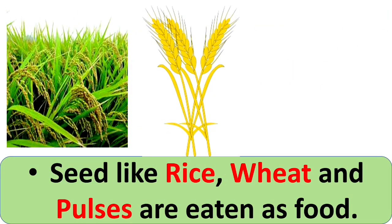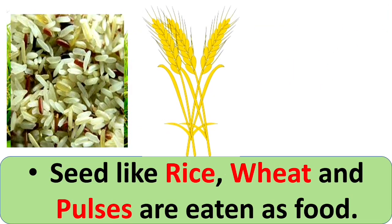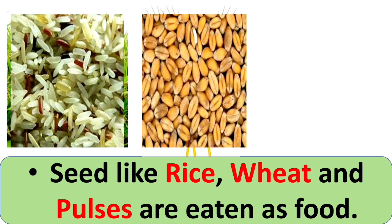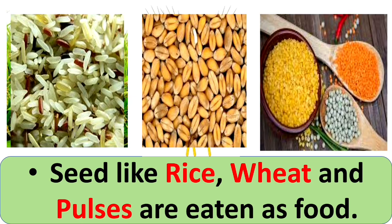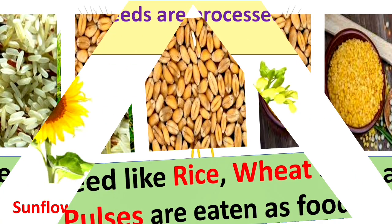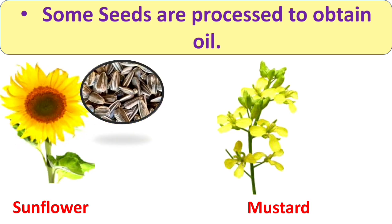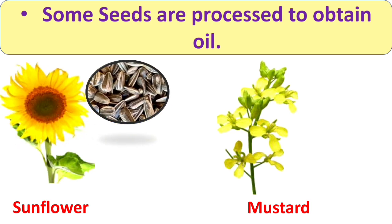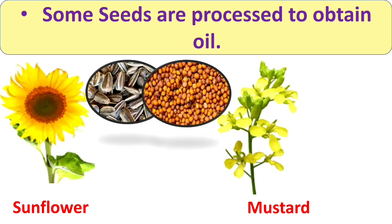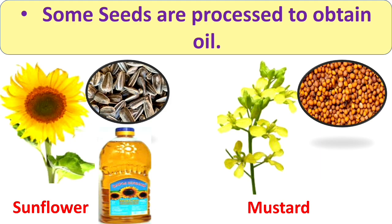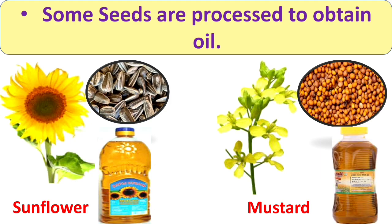Seeds like rice, wheat and pulses are eaten as food. Some seeds, like those of sunflower plants and mustard plants, are processed to obtain oil. We get oil from these seeds.